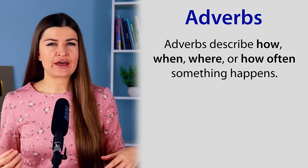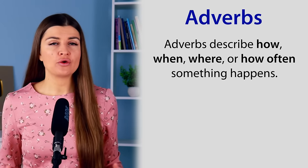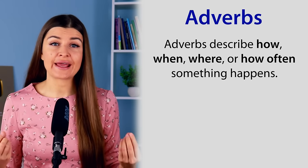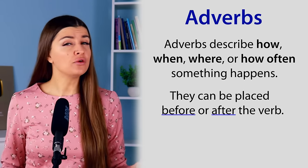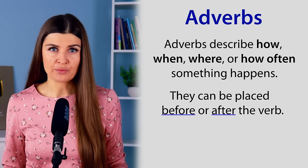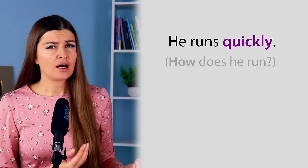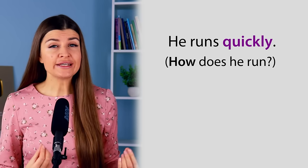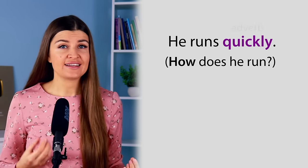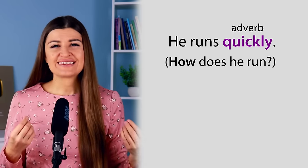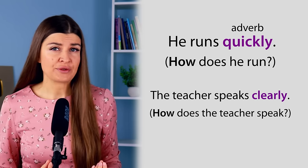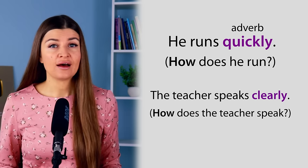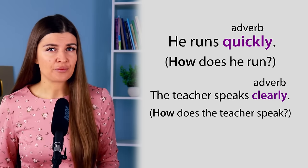We also use adverbs to describe verbs. Adverbs describe how, when, where or how often something happens. They can be placed before or after the verb. For example, he runs quickly. How does he run? Quickly — quickly is an adverb. The teacher speaks clearly. How does the teacher speak? Clearly — clearly is an adverb.